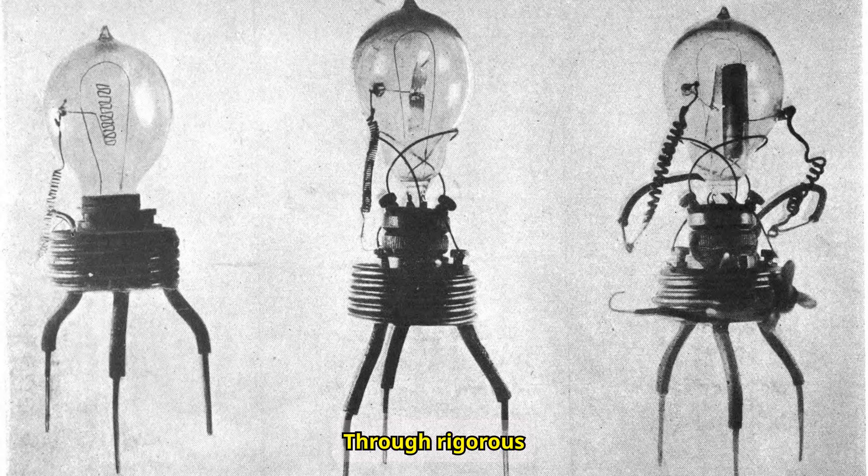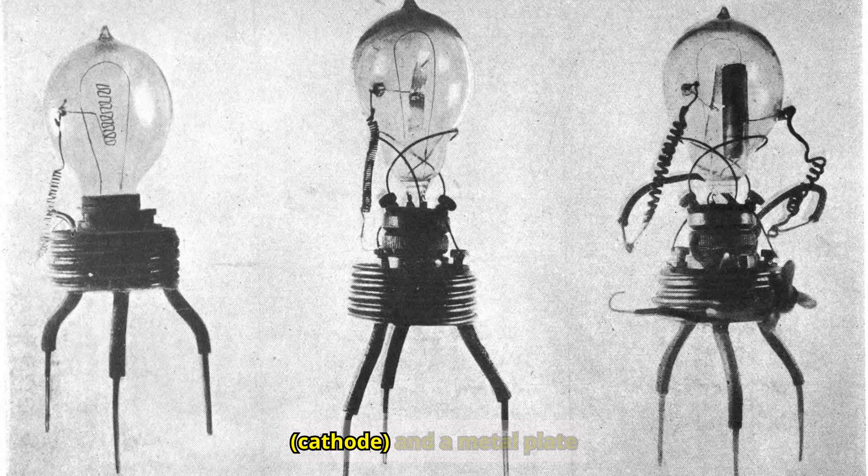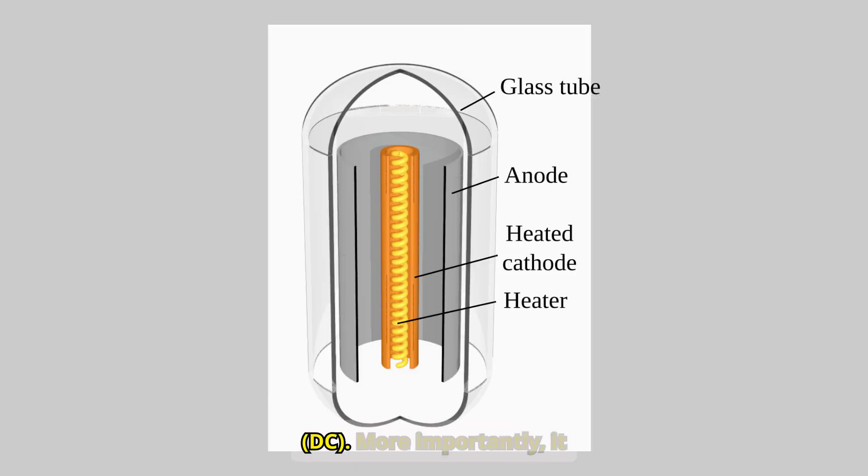Through rigorous experimentation, Fleming developed a device with two electrodes: a heated filament cathode and a metal plate anode, enclosed in a vacuum. This device allowed electric current to flow in only one direction, effectively converting alternating current (AC) into direct current (DC). More importantly, it could amplify weak electrical signals, a capability that had profound implications for communication technology.